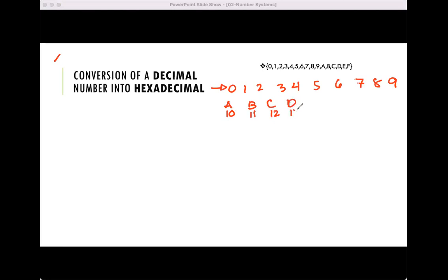D for 13, E and F for 14 and 15. Okay, so let's have an example. Let's say I have 72, base 10 for formality. I will convert that to base 16. So to convert that, I'll divide it by 16.